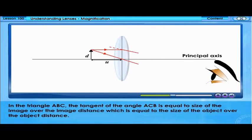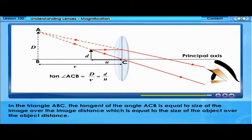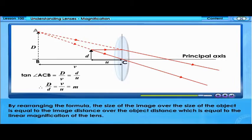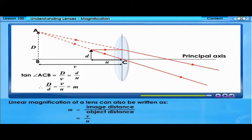In triangle ABC, the tangent of angle ACB equals the size of the image over the image distance, which equals the size of the object over the object distance. By rearranging the formula, the size of the image over the size of the object equals the image distance over the object distance, which equals the linear magnification of the lens. Linear magnification can also be written as M equals V over U, where V is the image distance and U is the object distance.